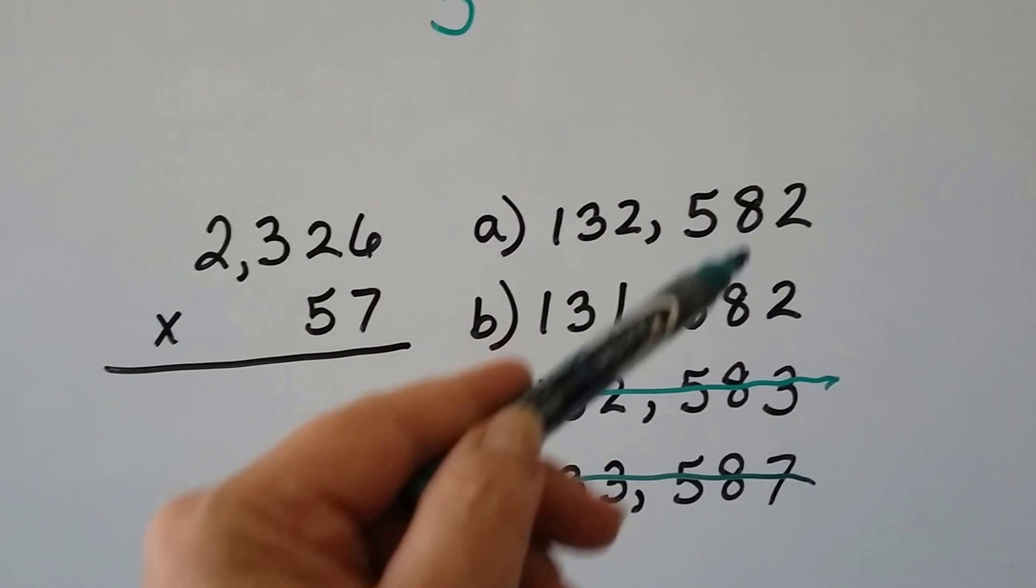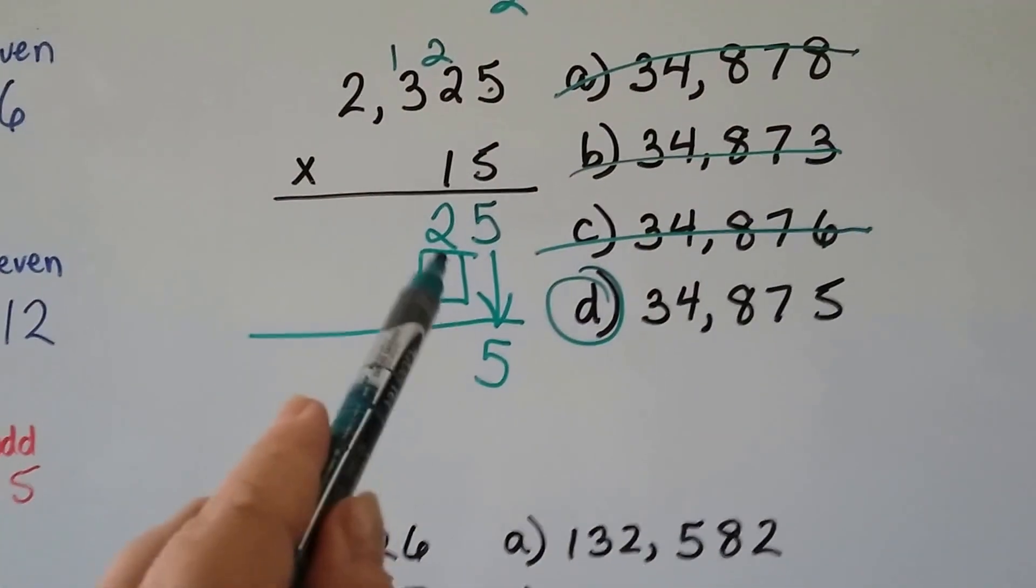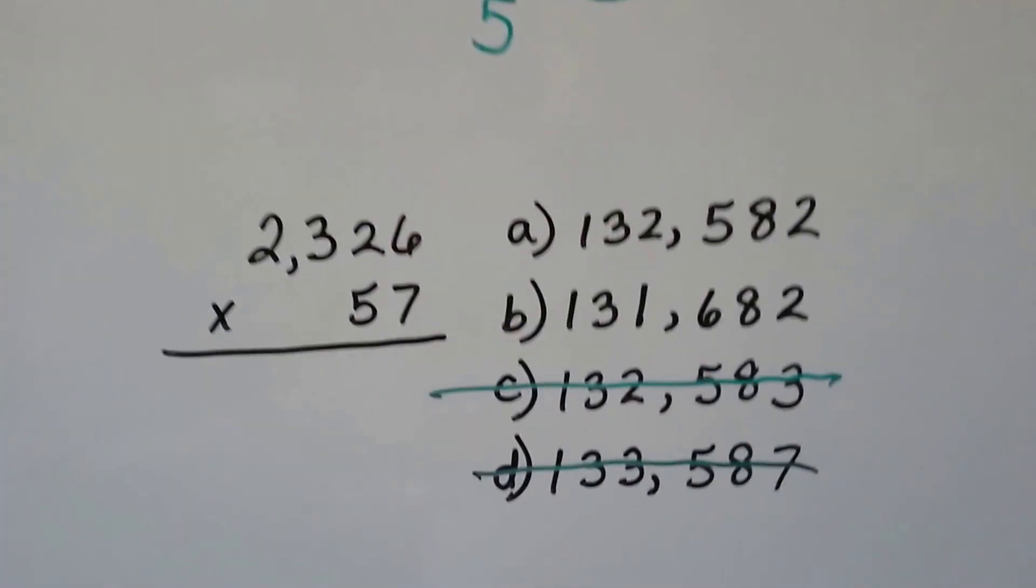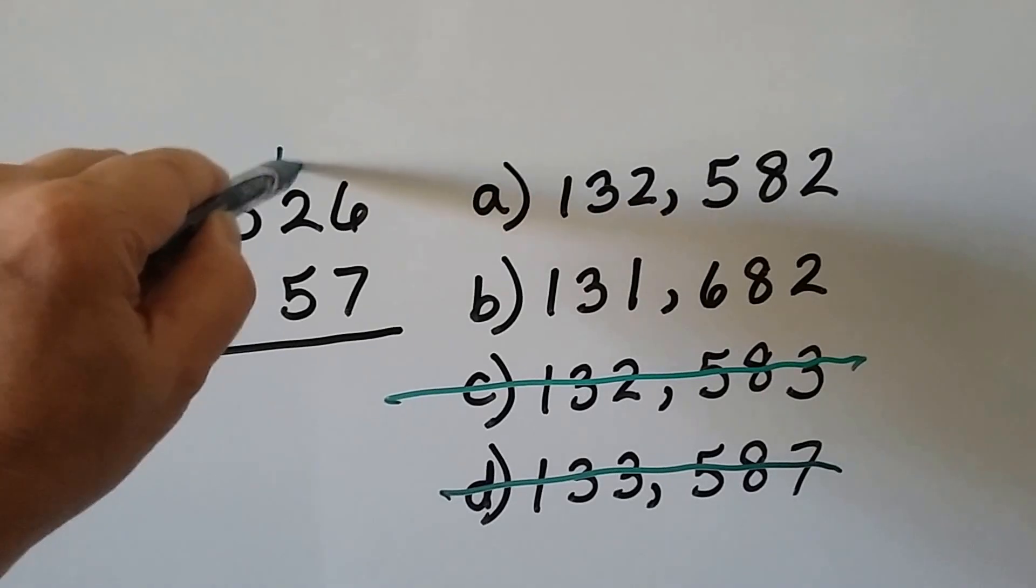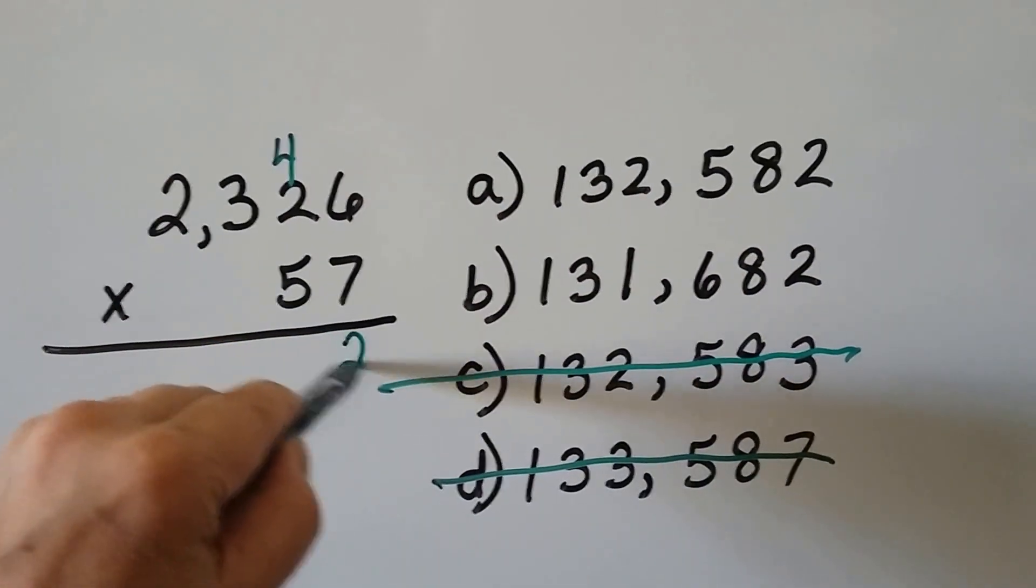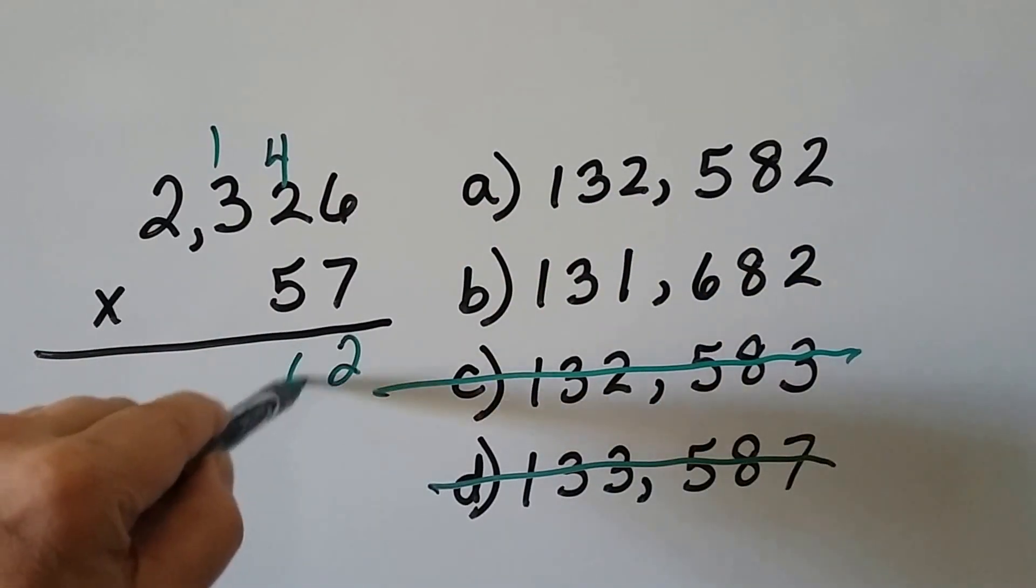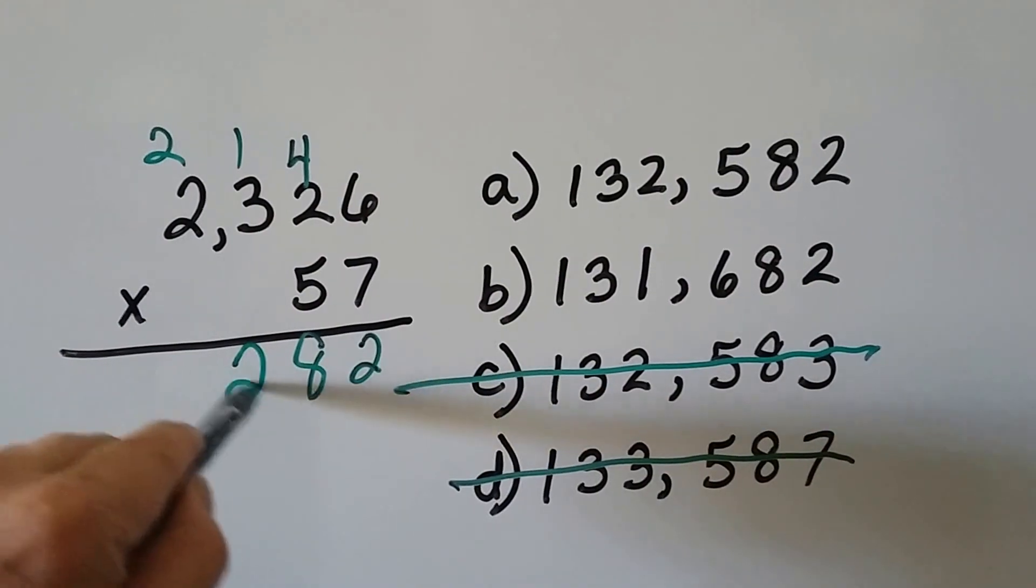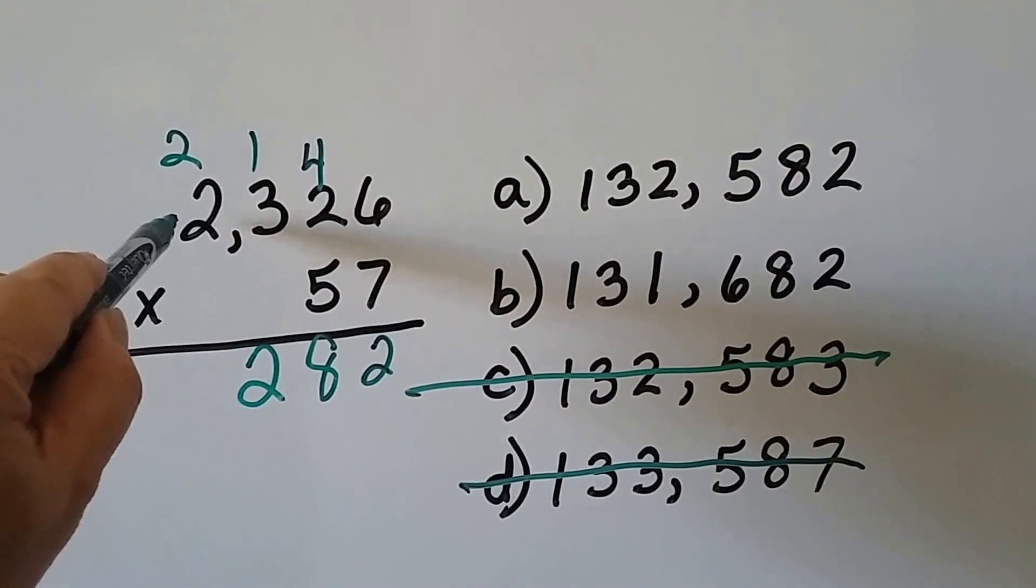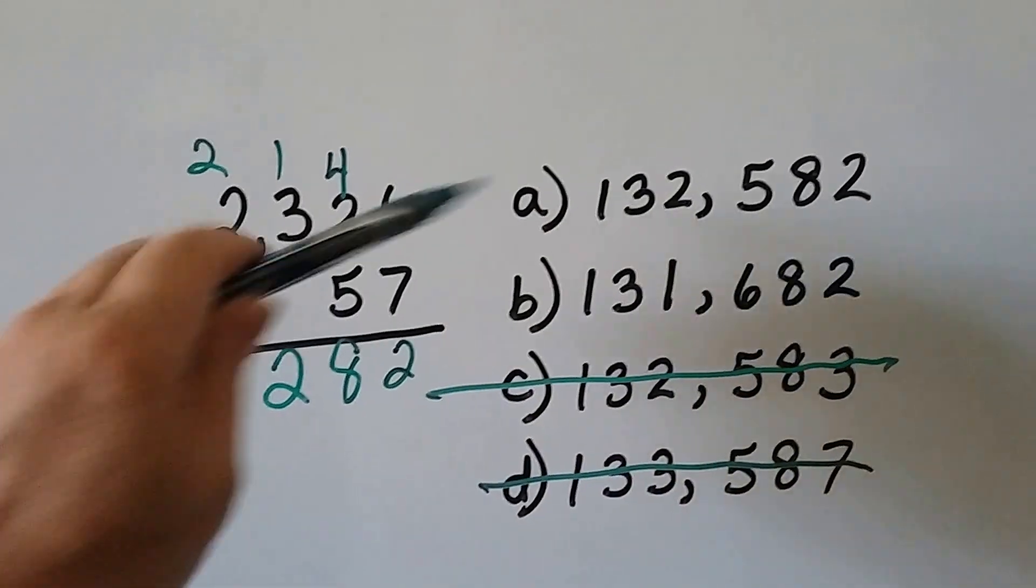But look, they both end with an eight, two. So we might have to go a little farther than this into our multiplication to find the answer, but we still may not have to do the whole thing. Seven times six is 42. We carry the four, regroup it, put the two down. Seven times two is 14, plus the four is 18. Seven times three is 21, 22. Seven times four is 14, 15, 16. Now it's the five's turn, so let's get rid of our regroupings.